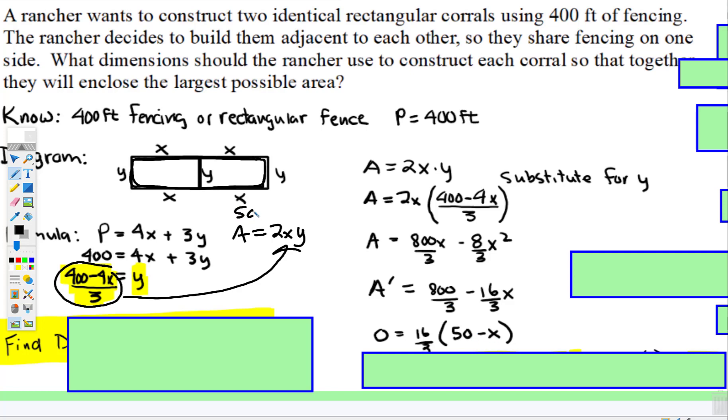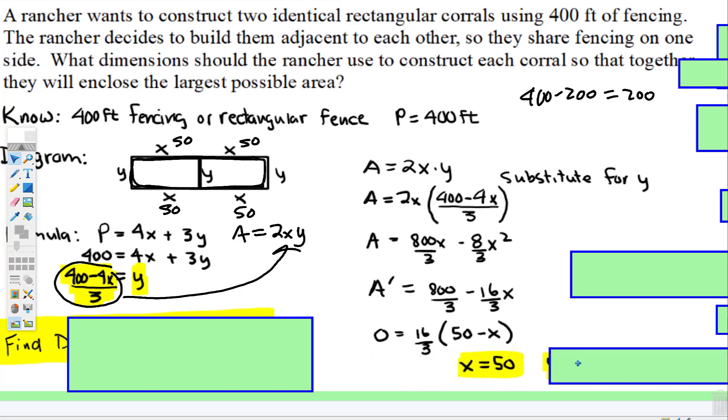So, if this is 50, that means this is 50, this is 50, this is 50, this is 50, so that's 100, that's 200. Well, 400 subtract 200 is equal to 200. Well, now there's three y's that are left. So, x is equal to 50, y is equal to 200 thirds.